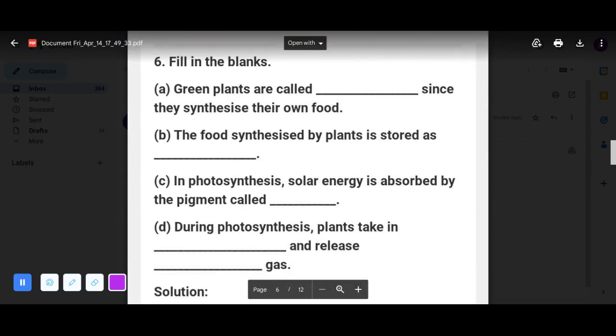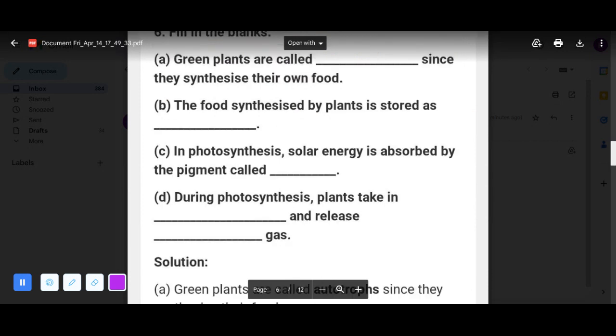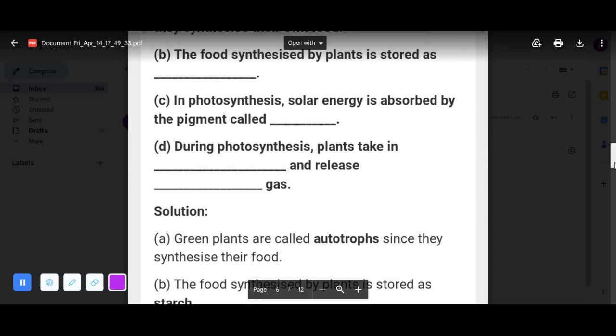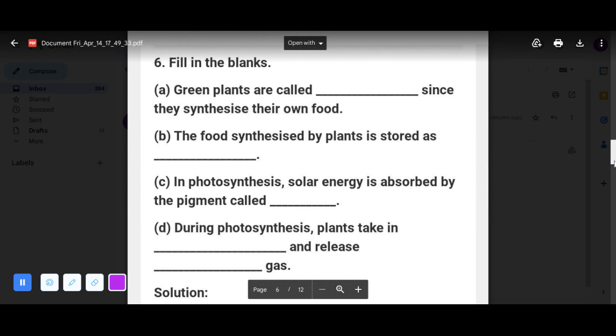Now next, fill in the blanks. Green plants are called blank since they synthesize their own food. Yes, we have learned in our previous video, green plants are autotrophs. Let's check. Yes, green plants are the autotrophs.